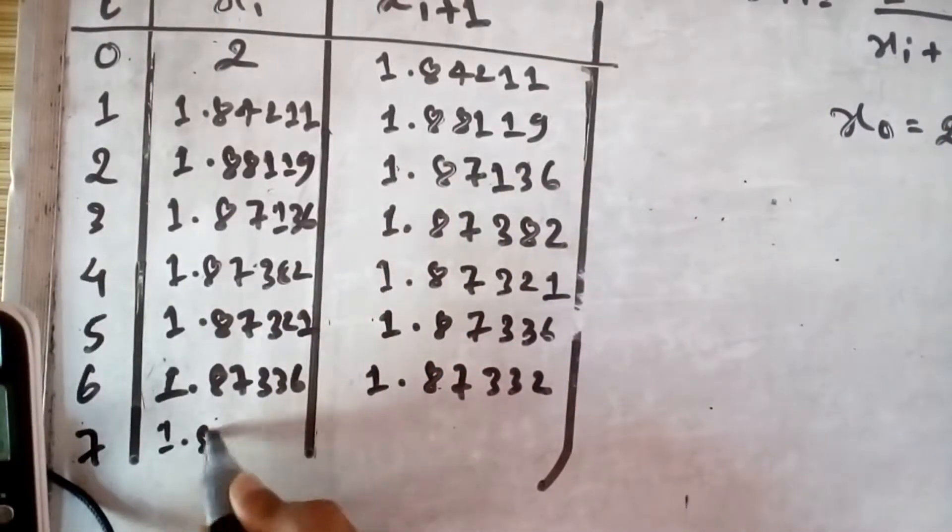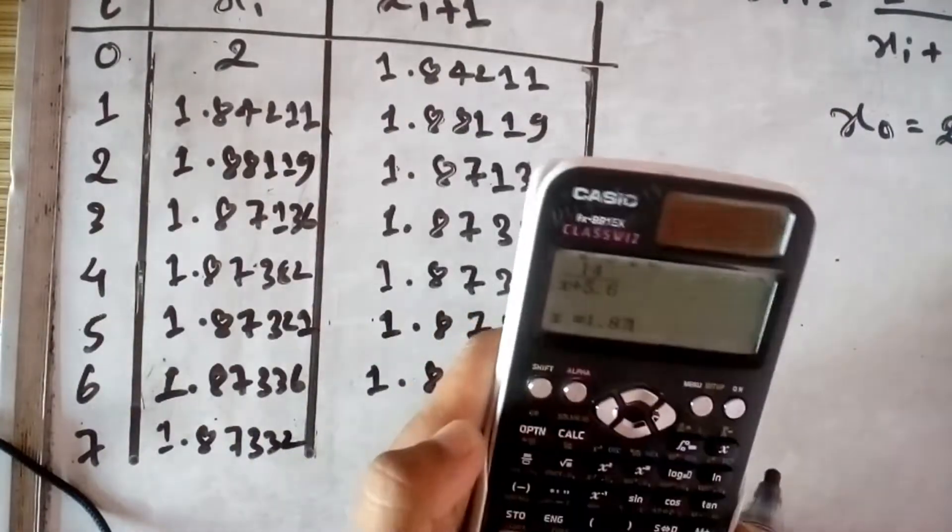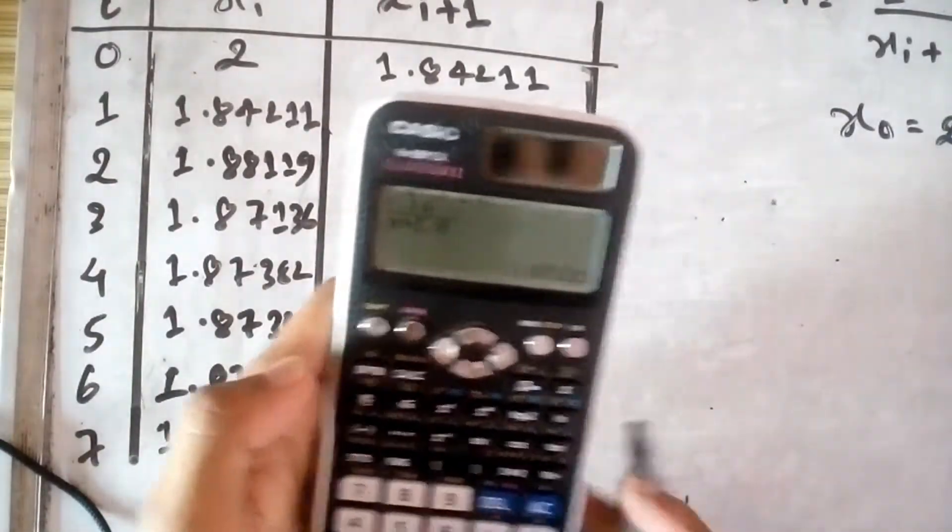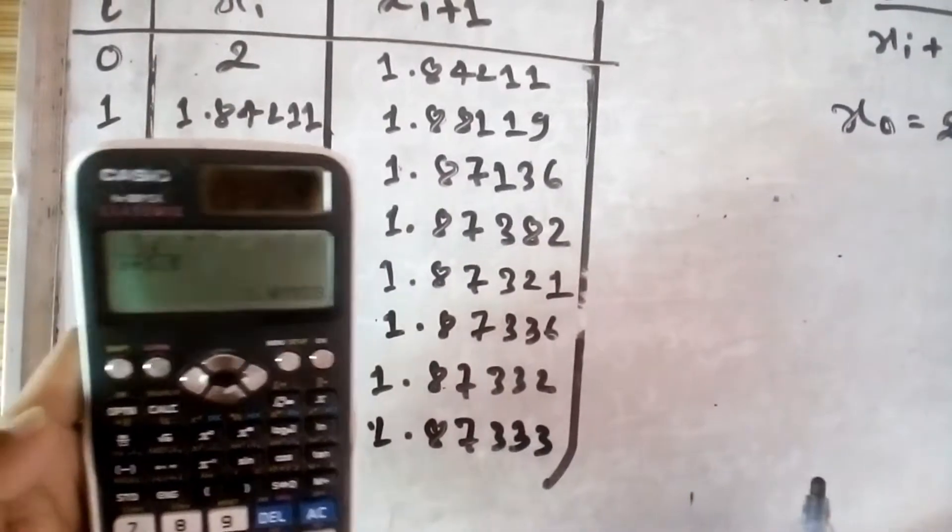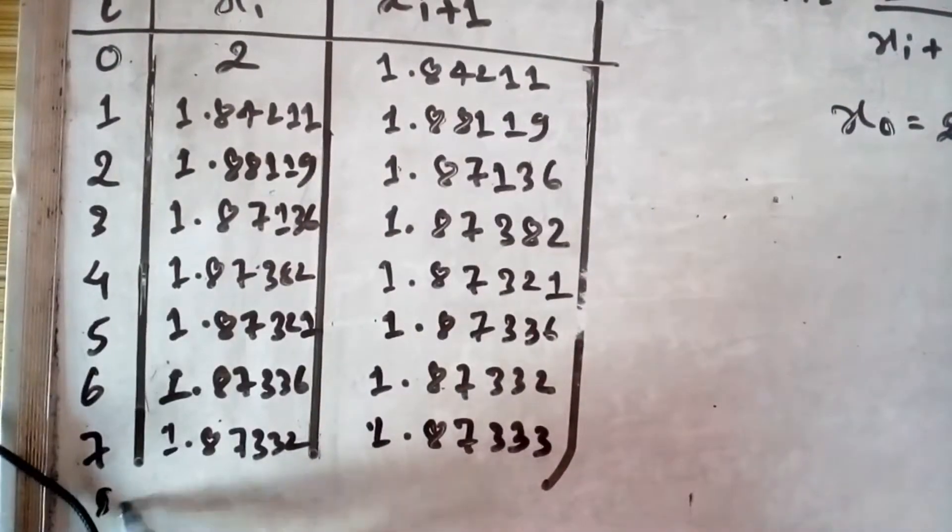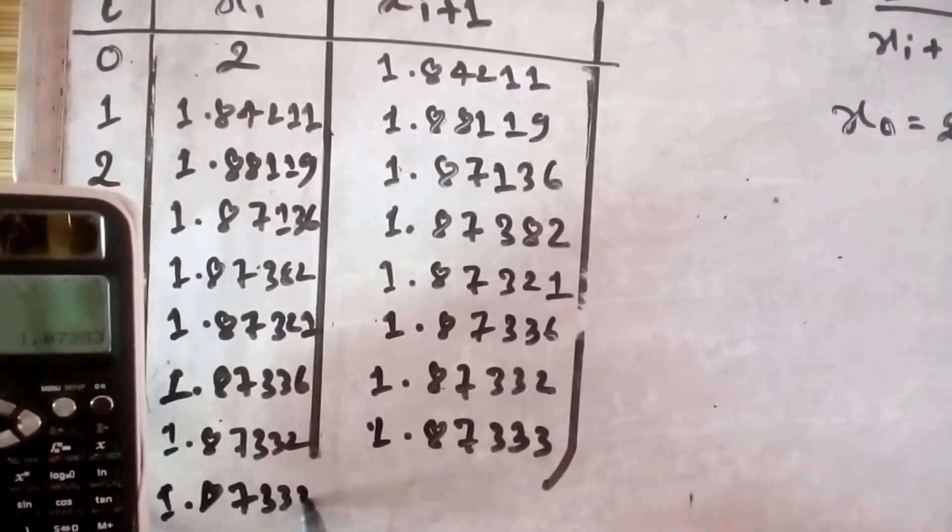Now write it here 1.87336, though you get 1.87336. You get 1.87336, now you put 1.87333.